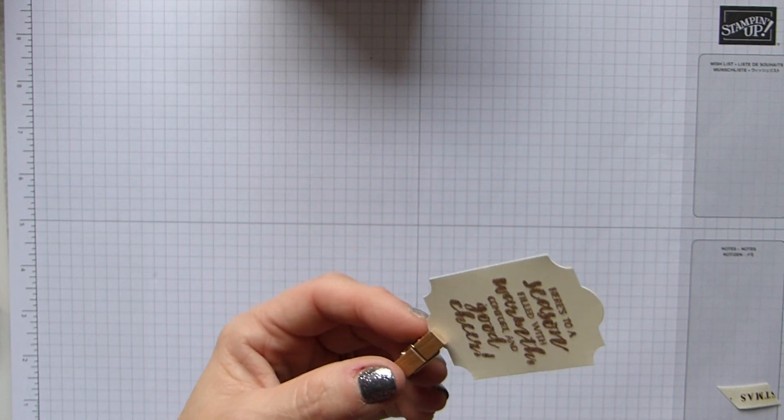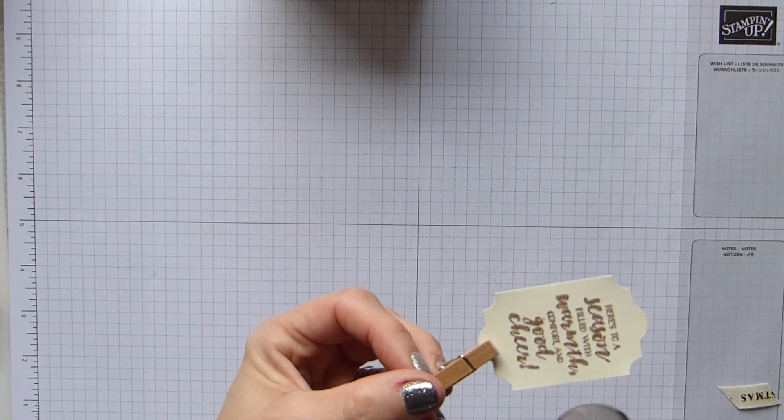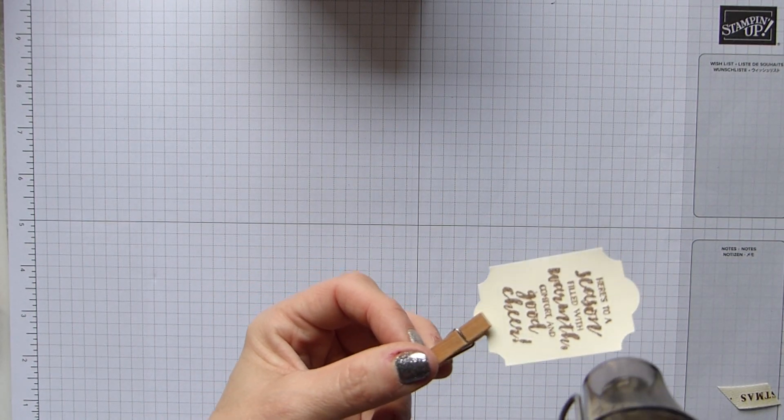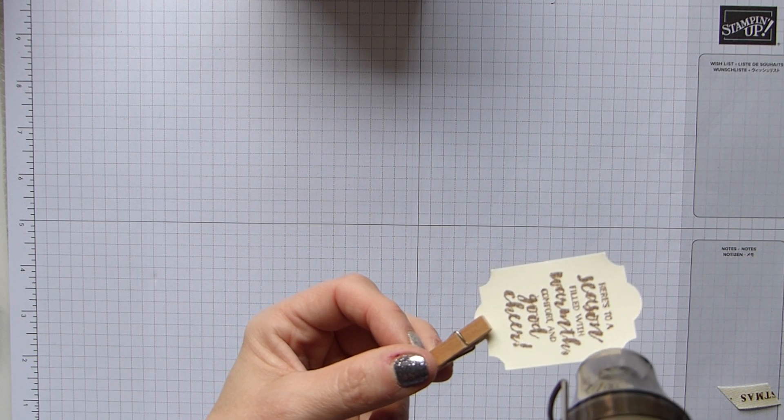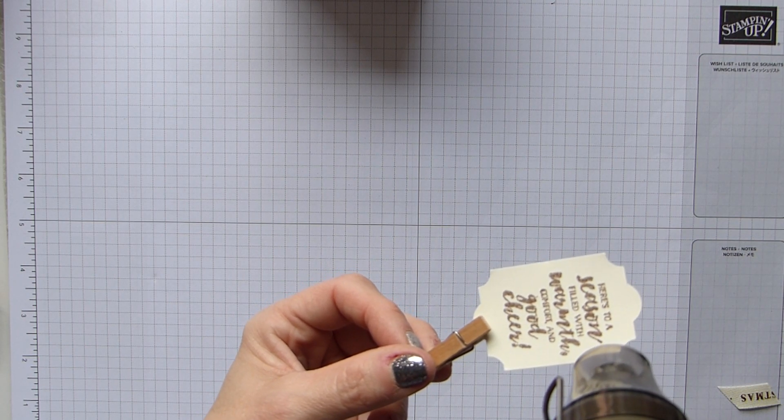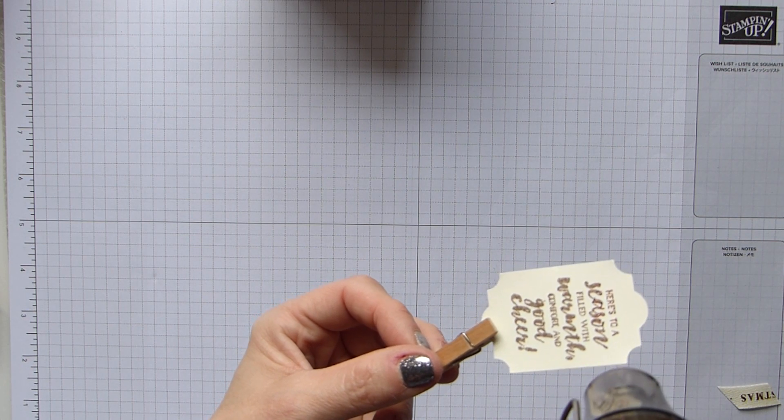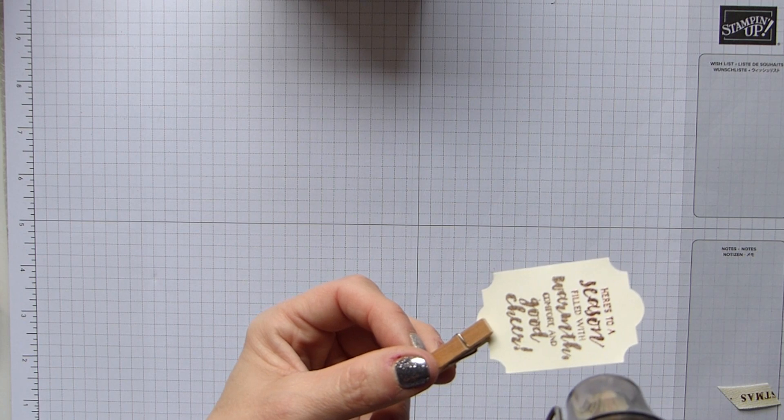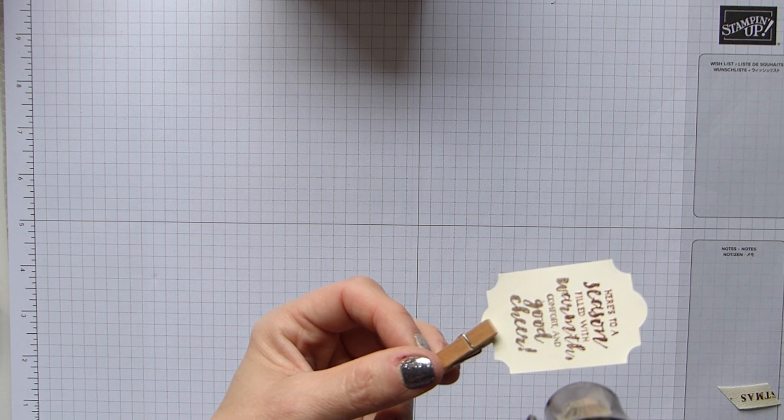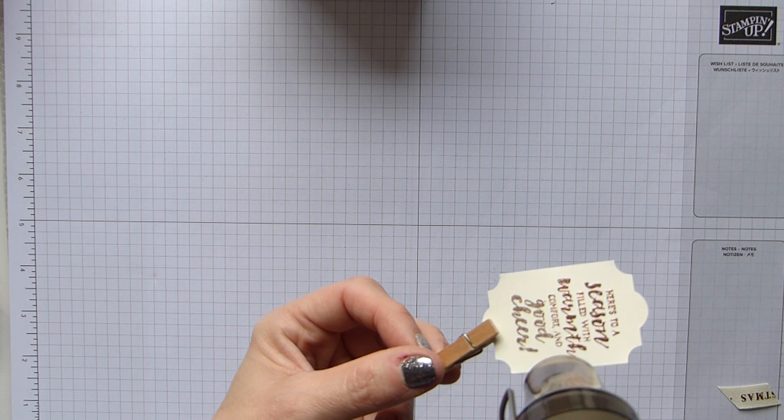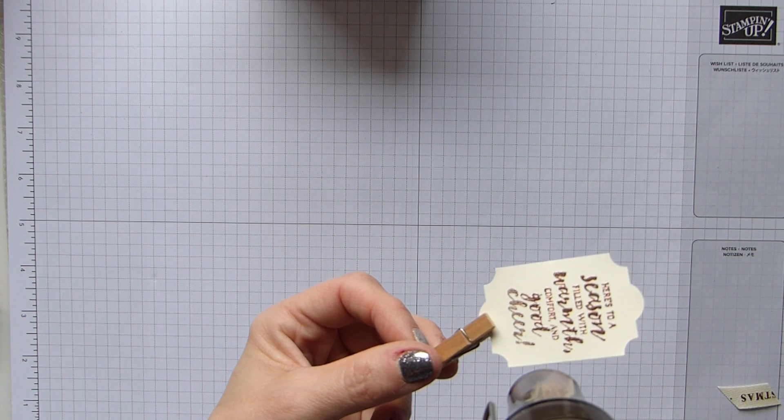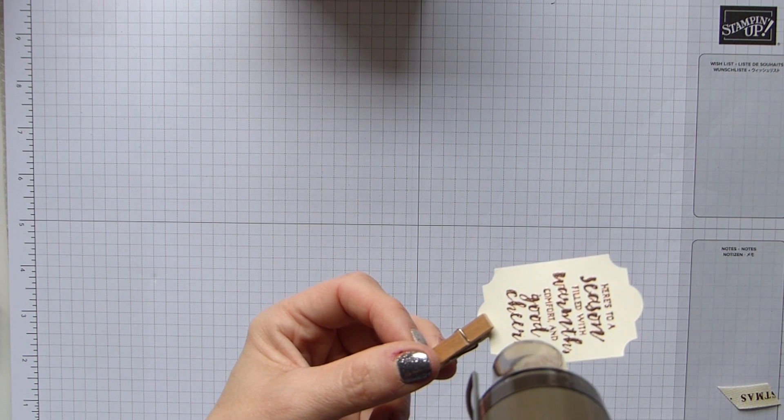And because this is, obviously if you wanted to punch it after you've heat embossed it, that's fine. I just use one of my little mini pegs to hold it so that my hand doesn't get too hot when I heat it up. And then we're just going to heat emboss that gorgeous sentiment, and I can see it's just starting to take.